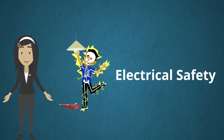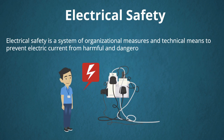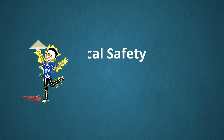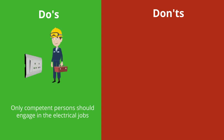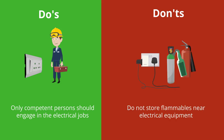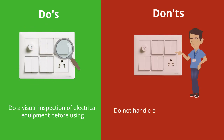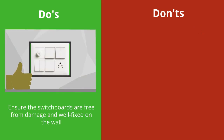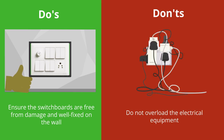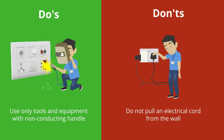Now we come to electrical safety, which is a system of organizational measures and technical means to prevent electric current from harmful and dangerous effects on workers. Do's and don'ts: only competent persons should engage in electrical jobs; do not store flammables near electrical equipment; do a visual inspection of electrical equipment before using; do not handle electrical equipment in wet conditions; ensure switchboards are free from damage and well fixed on the wall; do not overload electrical equipment; use only tools with non-conducting handles; do not pull an electrical cord from the wall.